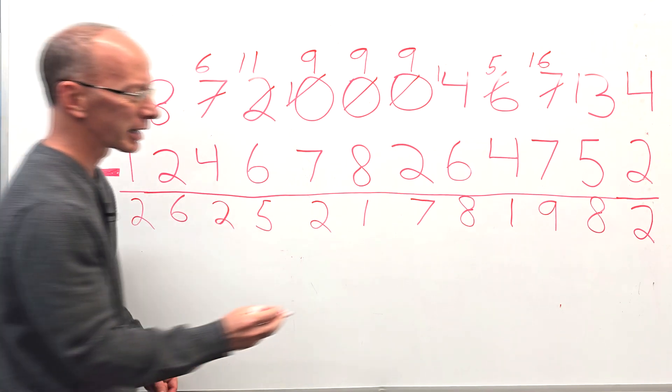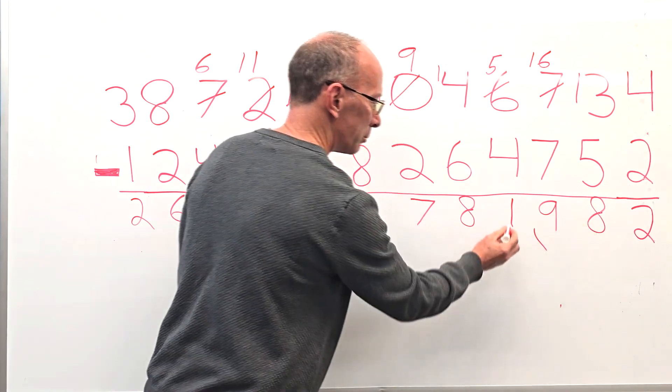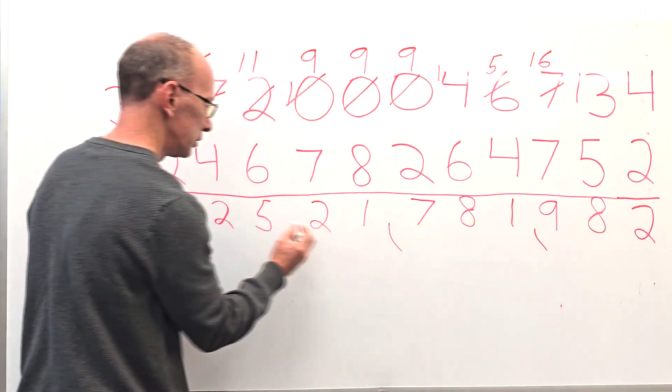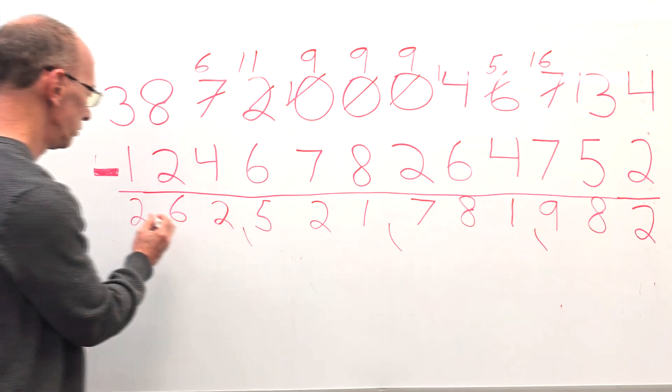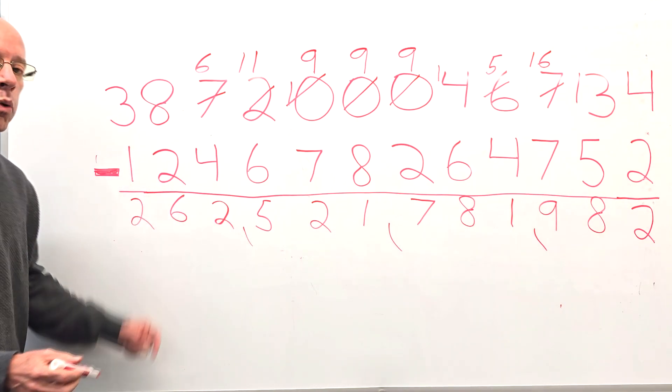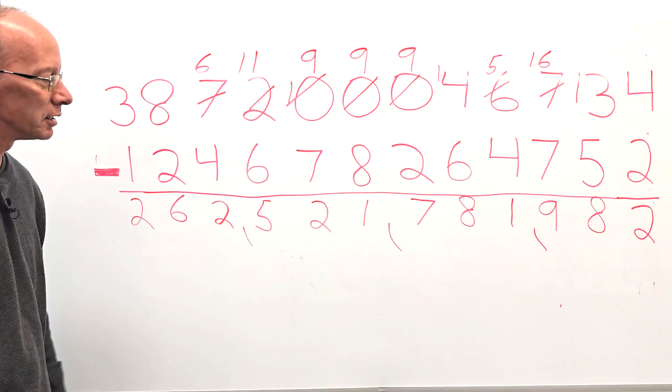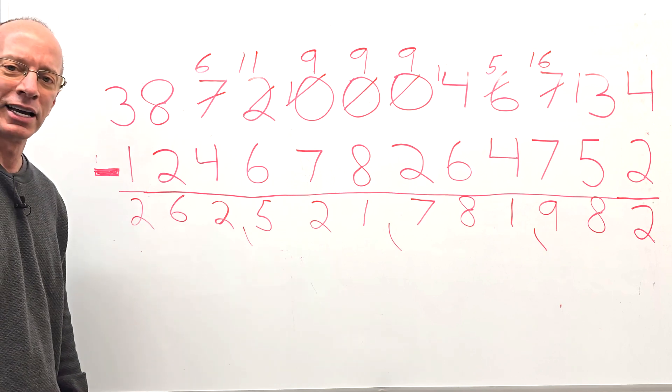Let's go ahead and put some commas in here. I like to always put commas in after every three numbers. One, two, three. One, two, three. One, two, three. Wow. Oh my goodness. That was kind of fun, wasn't it? I hope you had fun.